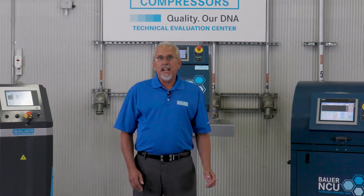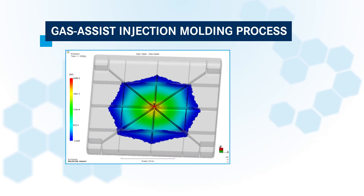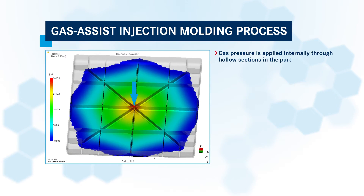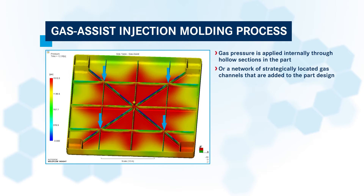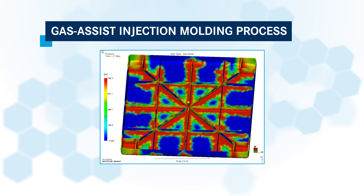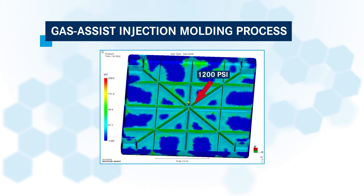Now let's add gas channels and apply GIT to the process. With GIT, the gas pressure is applied internally through hollow sections in the part or via a network of strategically located gas channels that are added to the part design. The internal gas pressure is significantly lower than the pack pressure used in conventional molding. The internal cavity pressure in this example went from 5,000 to around 1,200 psi and remained relatively equal throughout the part.